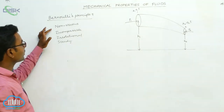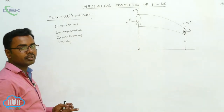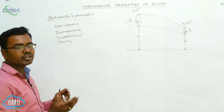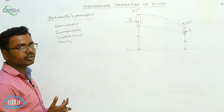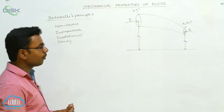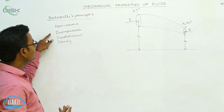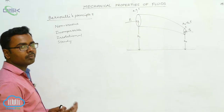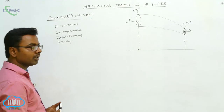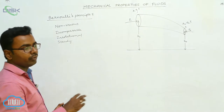The fluid should first of all be non-viscous. Non-viscous means there should be no viscous force. Viscous force is a fluid friction that acts between two layers and opposes the relative motion between the fluid layers. Now, there should be no viscous force between the layers, and the fluid should be incompressible. Incompressible means density should be the same at all points, and irrotational means there should be no net angular momentum at any point in the flow.